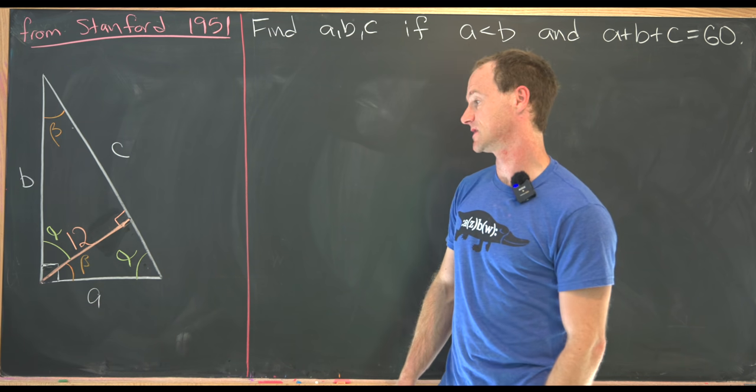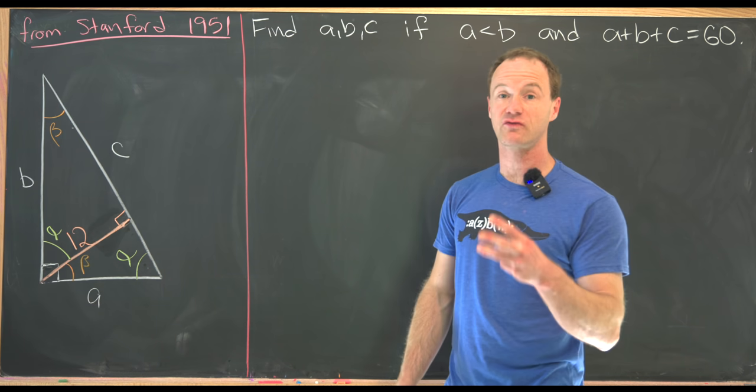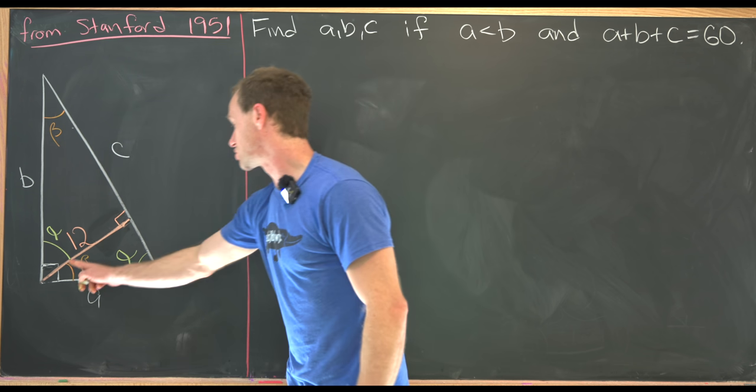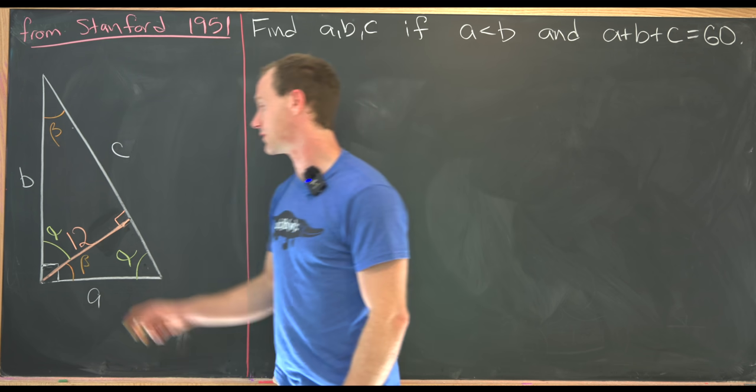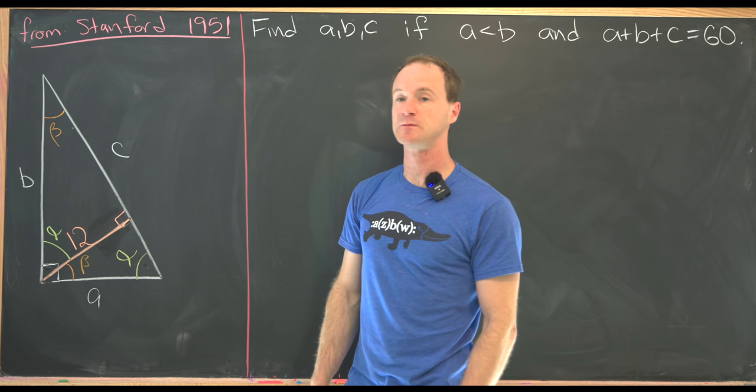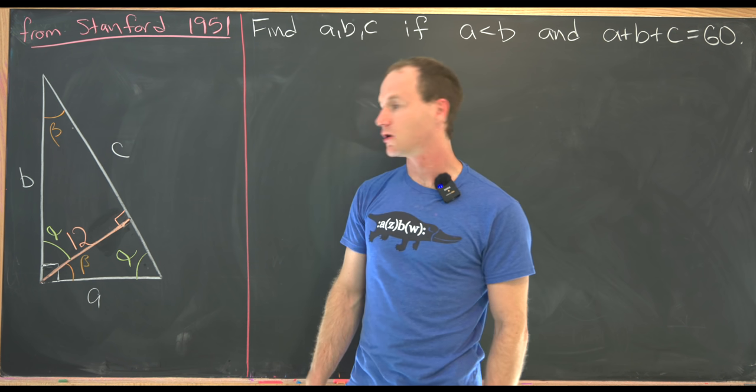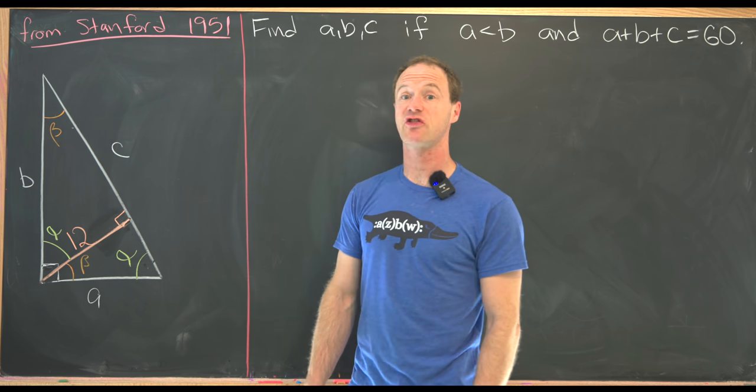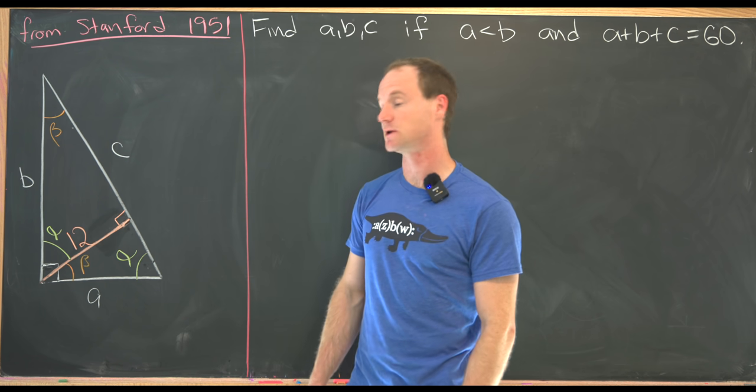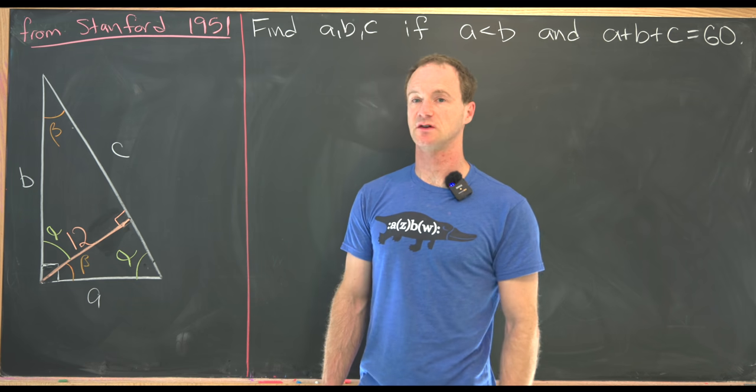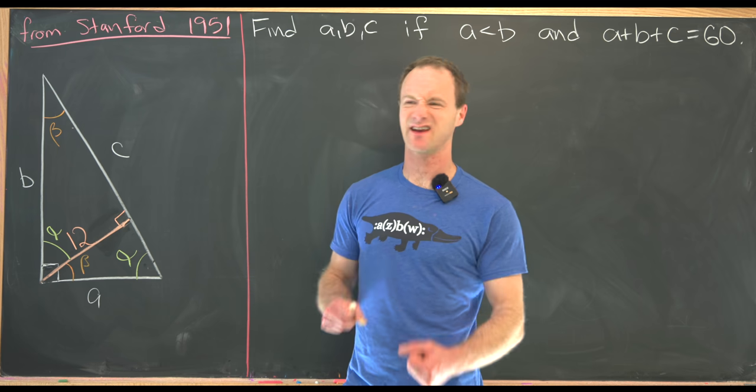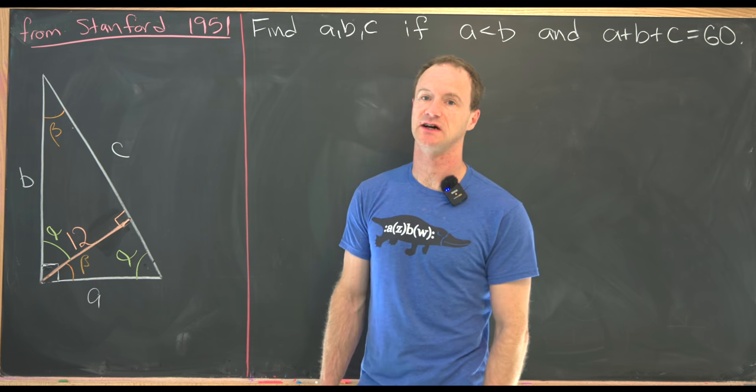But notice that that tells us that we've got three triangles, our large triangle, and our two small triangles that are building up that large triangle, all of which have angle measures alpha, beta, and 90 degrees. But that tells us that these three triangles are similar. But since those three triangles are similar, we know that the ratio of the side lengths, if we pick the appropriate sides are equal.